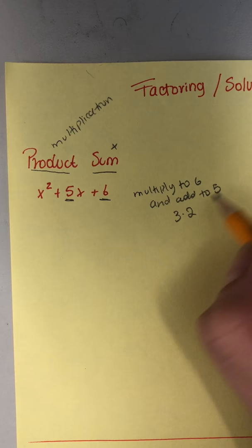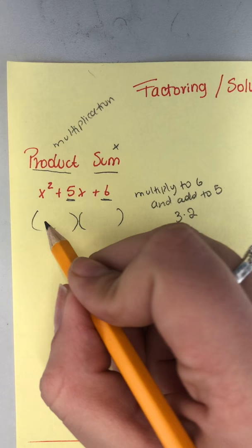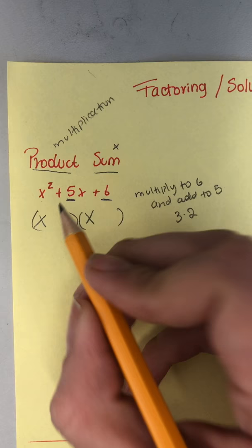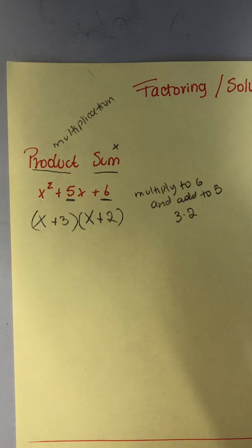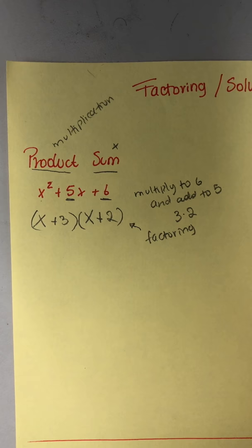In this case, two numbers that multiply to six are three and two, and they also happen to add to five. So those are the answers for my factors. Because you have x², I'm gonna have an x here and an x here, and then one of them was a positive three and a positive two. So this is factored: (x+3)(x+2).